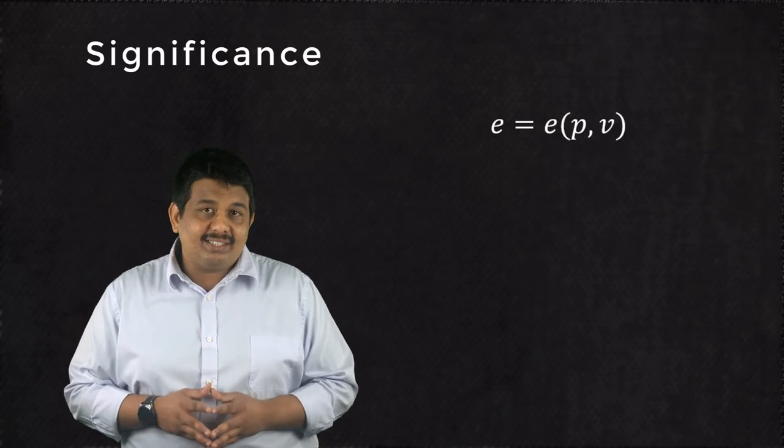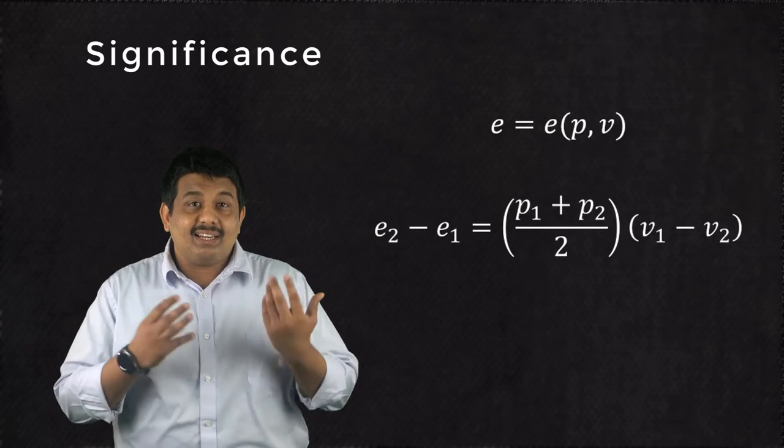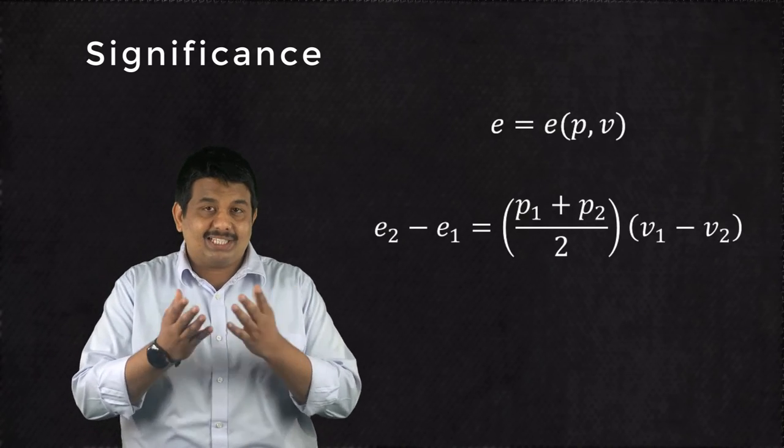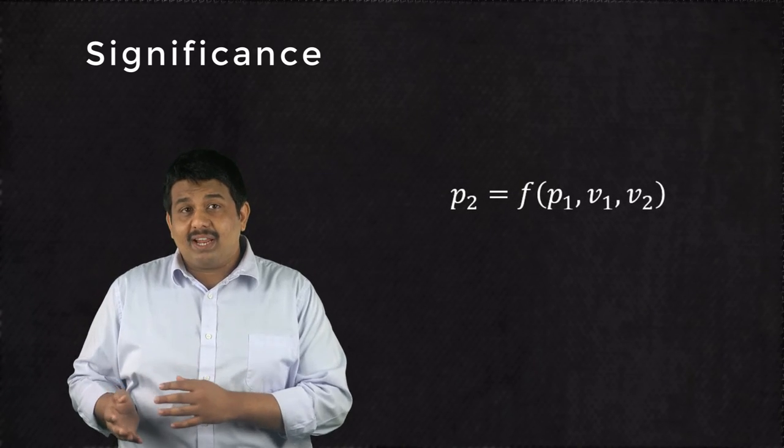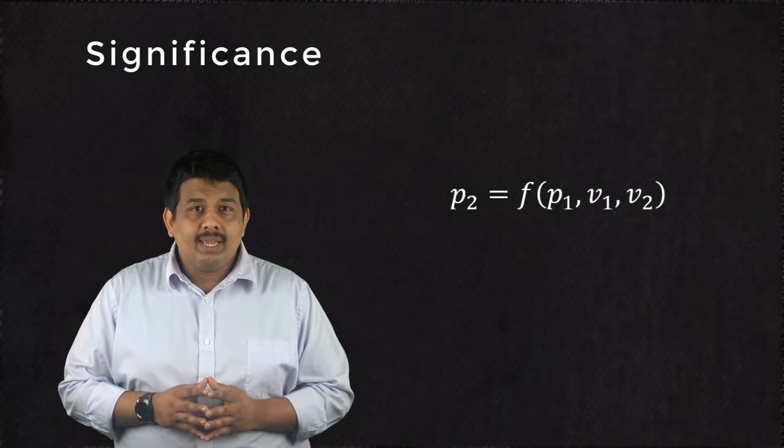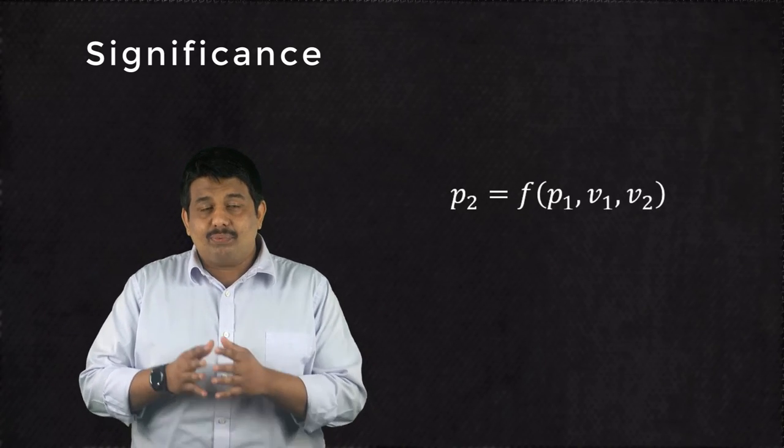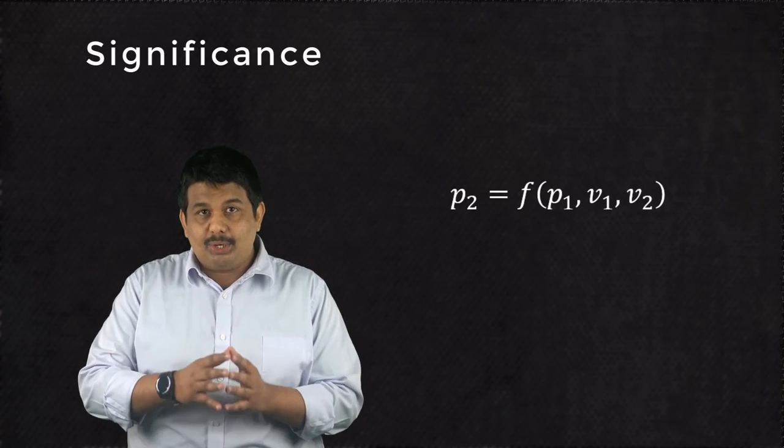Using this relationship, we simplify the Rankine Hugoniot equation as follows. When the upstream conditions P1 and V1 are known, this equation provides us with the relationship between P2 and V2.